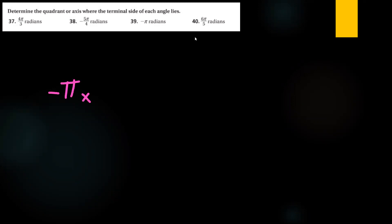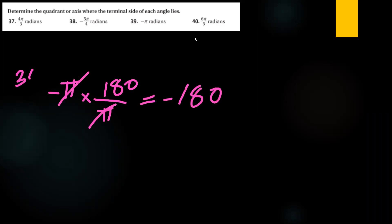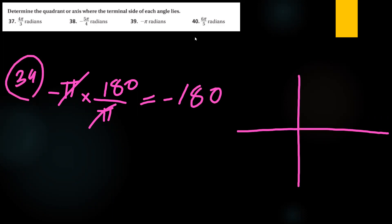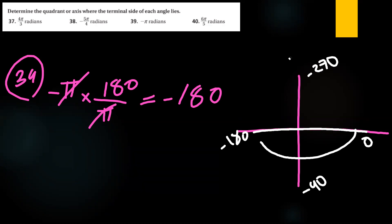Now let's find where the angle negative π is located. Negative π in radians — multiply by 180/π to get negative 180 degrees. Going around the circle: 0, negative 90, negative 180. So negative π, which equals negative 180°, is located on the negative x-axis.